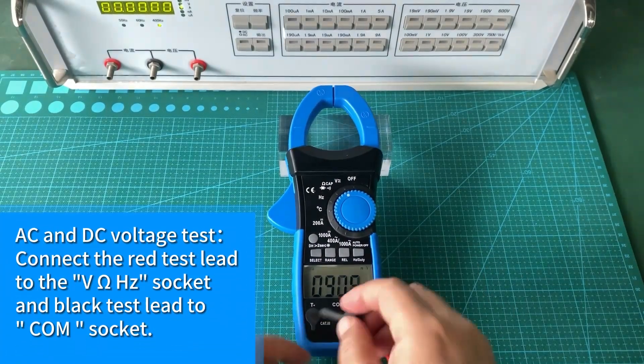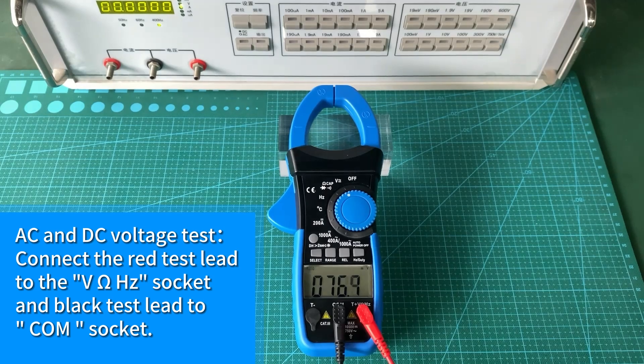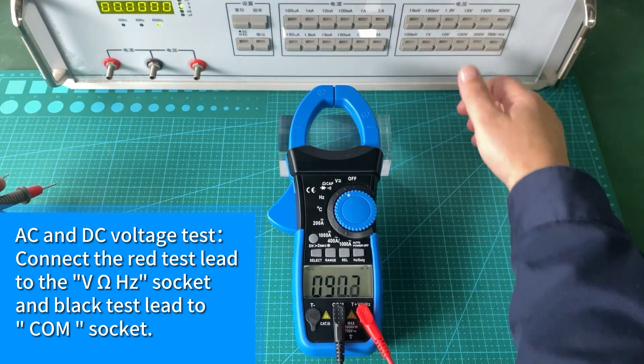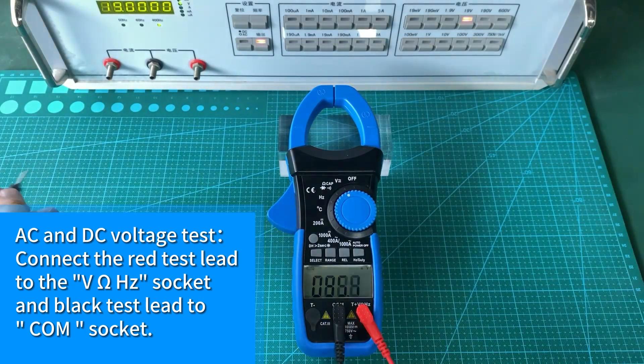AC and DC voltage test: Connect the red test lead to the V Omega Hz socket and black test lead to COM socket.